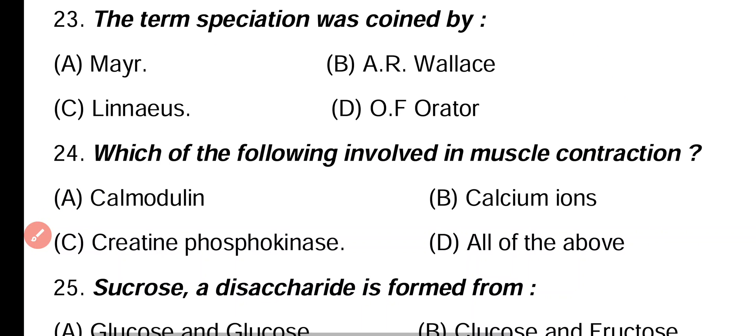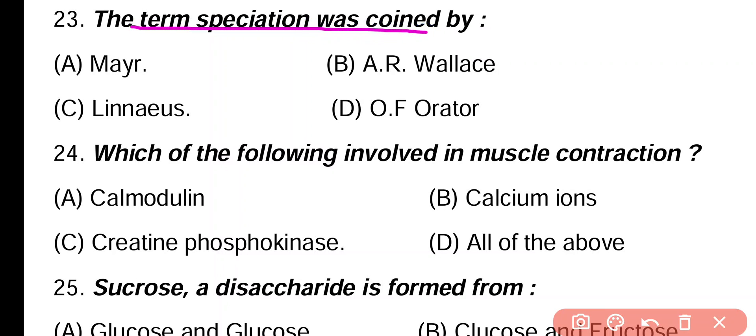Question 23. The term speciation was coined by: Mayor A.R. Wallace, Linus, O.F. Orator. Correct answer is option B. The term speciation was introduced by O.F. Orator, and Charles Darwin also initially did work on speciation.